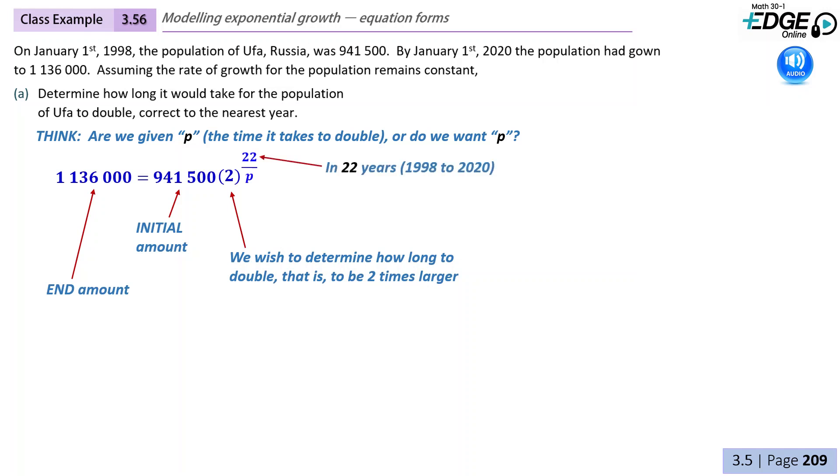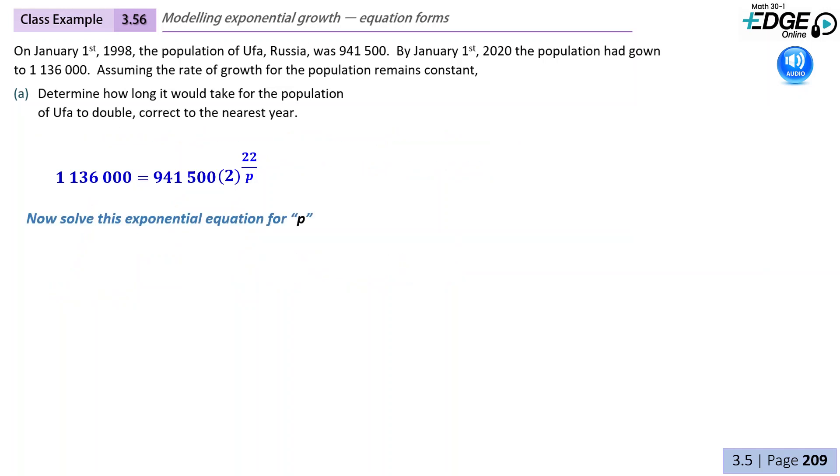And our time, our actual T value, would be 22 years. That's the amount of time between 1998 and 2020. We want to solve for P. We need to find that because P would be the amount of time required for our population to double in this case.